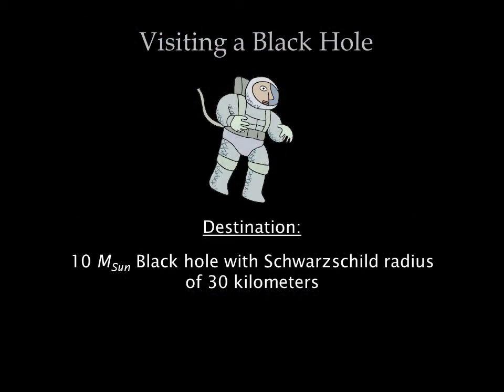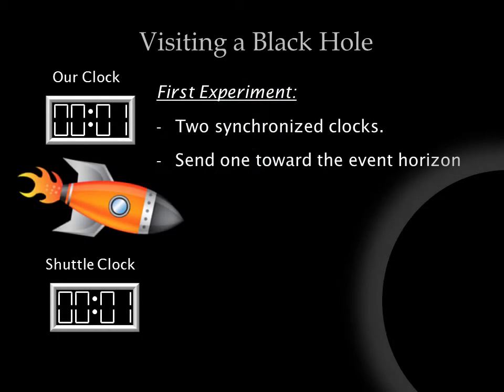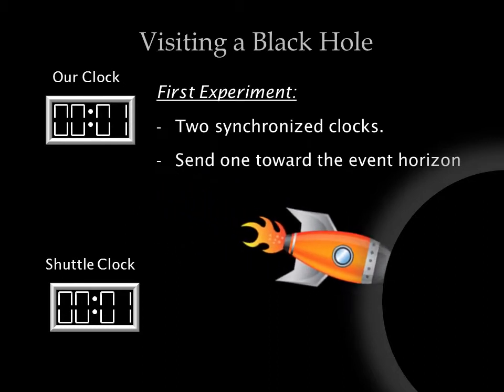It's interesting to think about what would happen if we were to visit a black hole. Let's take an imaginary journey to a 10 solar mass black hole with a Schwarzschild radius of 30 kilometers. We can then do some experiments to test general relativity. Einstein's theory of general relativity says that time should run more slowly as the force of gravity grows stronger. It also predicts that light coming out of a strong gravitational field will be redshifted.